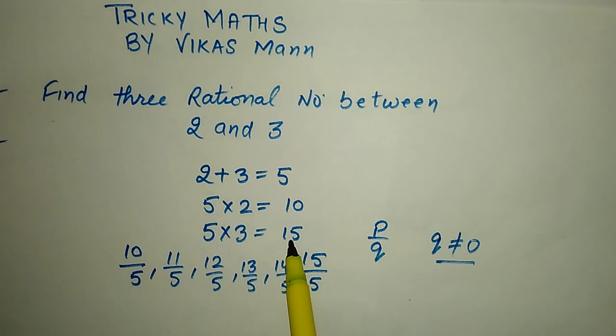We get 10 and 15, two numbers. We have to divide this with 5. 10 by 5 and 15 by 5. We get 5 twos are 10 and 5 threes are 15, same numbers. But we have to find three rational numbers between 2 and 3. Then we can write 11 by 5, 12 by 5, 13 by 5, 14 by 5.